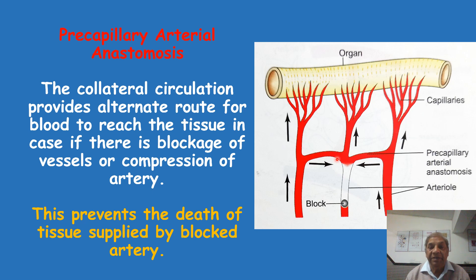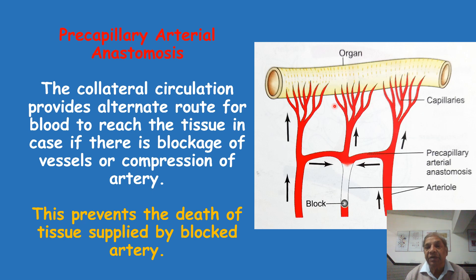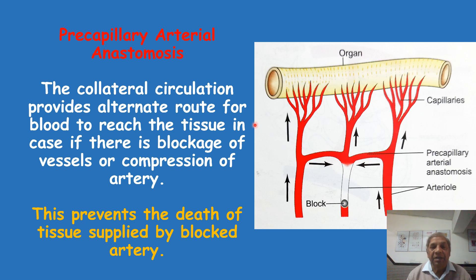These are very useful because if there is a blockage or compression on any of the arterioles, blood cannot go towards the capillary plexus of that arteriole. In that case, blood from the adjacent arteriole will come through the anastomosis and supply the capillaries of the blocked artery, providing blood to that tissue. So the capillary plexus supplied by the blocked arteriole will not die — this prevents the death of tissue supplied by the blocked artery. This is the very significant importance of the formation of pre-capillary arterial anastomosis.